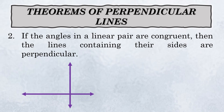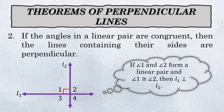The second theorem: if the angles in a linear pair are congruent, then the lines containing their sides are perpendicular. For example, with lines L₁ and L₂ forming angles one, two, three, and four — if angle one and angle two form a linear pair and are congruent to each other, meaning they form a straight line and have equal measures, then L₁ is perpendicular to L₂.